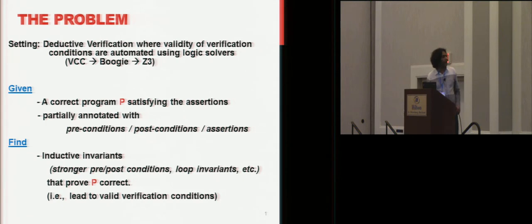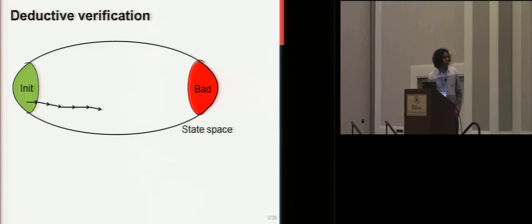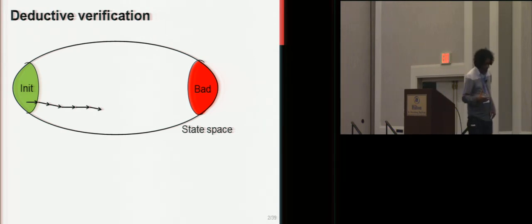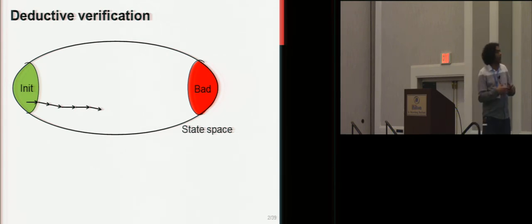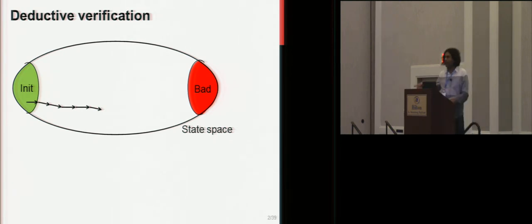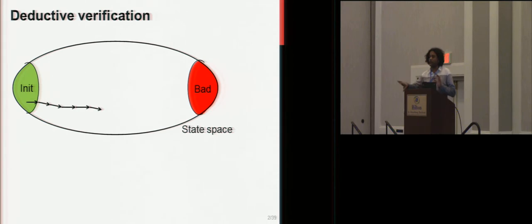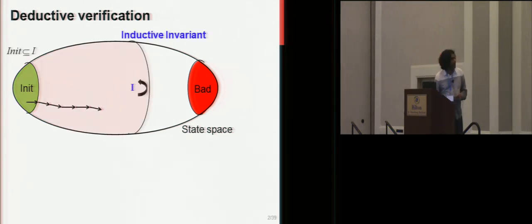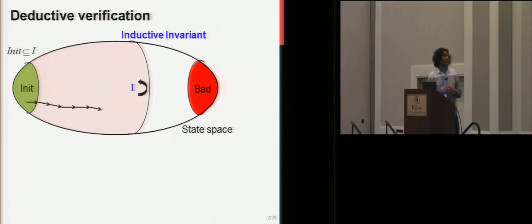You want to add loop invariants so that you can prove all the assertions in the program correct. That's the high-level problem. If you think of the state space of the program, since you're doing modular verification, you're looking at one module with some precondition — the initial states — and you have the set of assertions, the negation of the assertions, which is your set of bad states which you have to stay away from. Since the program is correct, you're not going to be able to reach the bad states. And an inductive invariant is a proof that you can't.